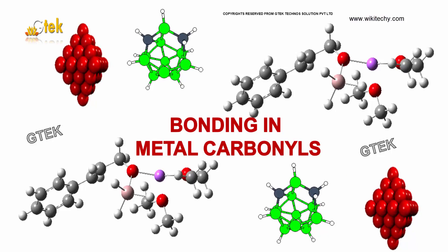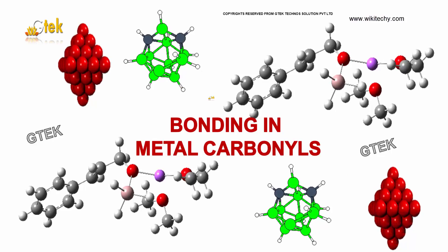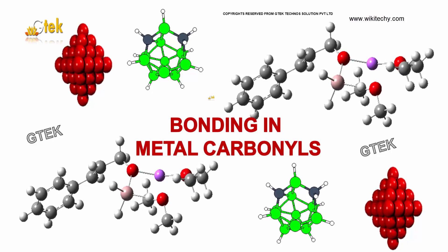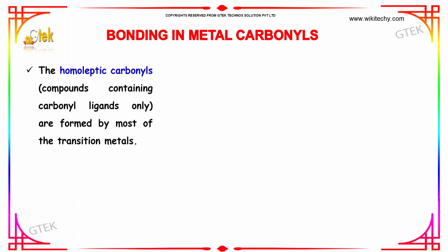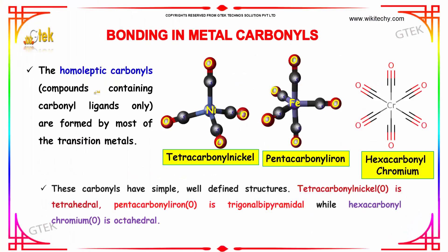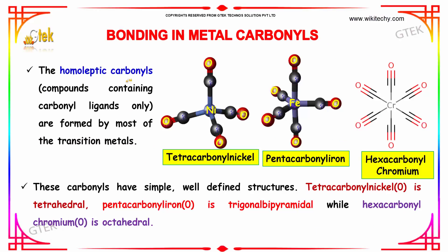This is on bonding in metal carbonyl. The homoleptic carbonyls — compounds containing the carbonyl ligands only — are formed by most of the transition metals. These carbonyls will have a simple, well-defined structure.